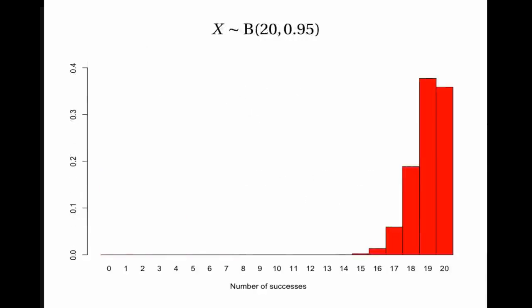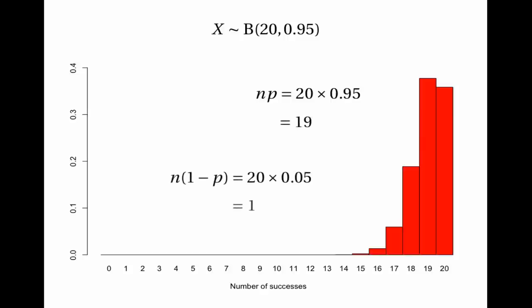We can also get into trouble at the other end. With 20 trials and p=0.95, np is 19 but n(1-p) is 20 times 0.05 which is only 1 — a problem value. The distribution is bunched up against the right-hand side and is negatively skewed. Superimposing a normal distribution shows that the area under the curve at x=20 is much smaller than the bar there, and the area at x=18 is much too large. So this is another situation where the normal approximation cannot be used.